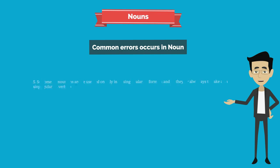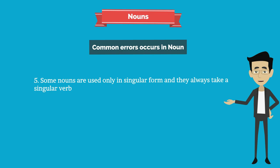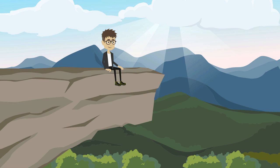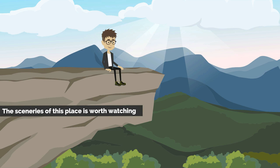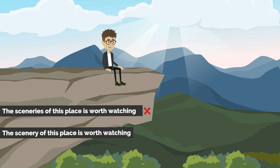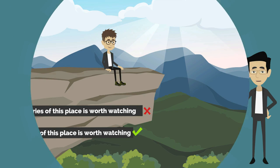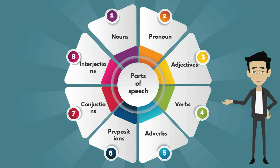Fifth common error: some nouns are used only in singular form and always take a singular verb. Incorrect: 'The sceneries of this place is worth watching.' Correct: 'The scenery of this place is worth watching.' This concludes the lesson on nouns, the simplest among the eight parts of speech.